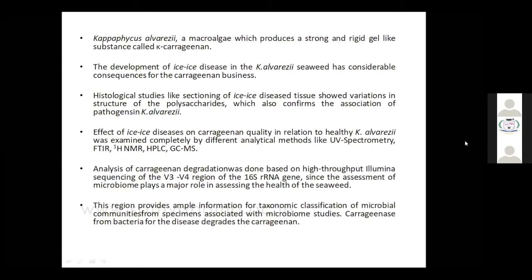Kappaphycus alvarezii is a macroalgae which produces a strong and rigid gel-like substance called kappa-carrageenan. As everyone knows, carrageenan has several isoforms — kappa, iota, and lambda. Kappa-carrageenan plays a major role, and everyone knows that carrageenan also has antiviral activity. Carrageenan is responsible for giving the algae its brown color.